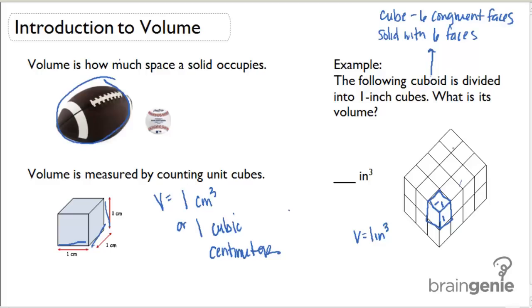If we count up all the cubes in this cuboid, we'll figure out the volume of the entire cuboid. Let's break this up into rows. We have a top row here—everything above my line. If I count the cubes, I have 1, 2, 3, 4, 5, 6, 7, 8, 9, 10, 11, 12. I have 12 cubes in the top row.